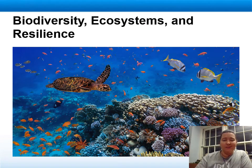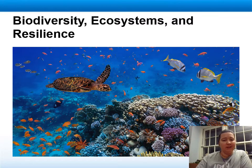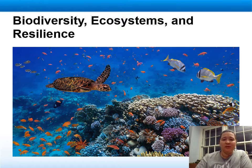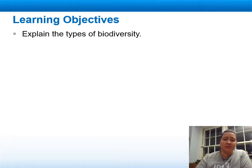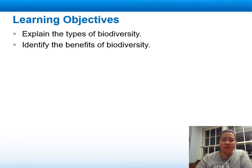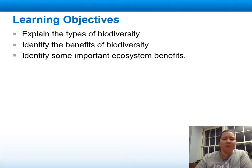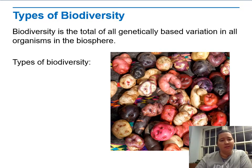Welcome to Unit 2, Lecture 6, Section 6.3 — the last one for the unit. In this one we're going to talk about biodiversity, ecosystems, and resilience. The learning objectives are: explain the types of biodiversity, identify the benefits of biodiversity, and identify some important ecosystem benefits.